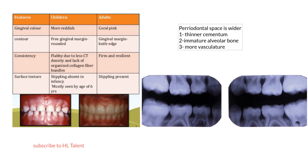I presented a table which shows the difference between the clinical features of both the child and the adult. The color of the gingiva of the child appears to be more reddish because it's less keratinized than the one in the adult, which appears more pink in color.